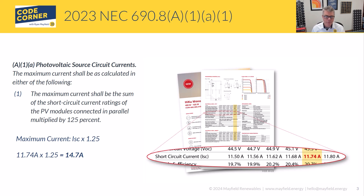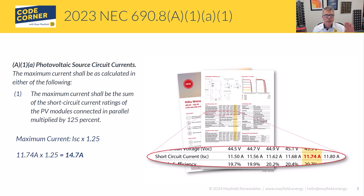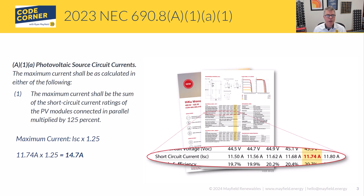First is A1A, which is actually broken into two subparts. I'm going to focus on the first one. The correction factor we're going to apply is to our PV system short circuit current value. On this slide we're showing you a spec sheet from a PV module manufacturer — you can see there in that bubble callout that 11.74 amps is the rated short circuit current at standard test conditions. What A1A1 is saying is we take that value and multiply it by 125%, and that becomes our maximum circuit current value.